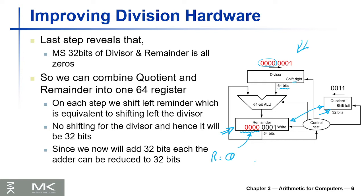The divisor will be 32 bits — we're going to cut it in half. We initialize the remainder register with the dividend, which is 32 bits. The arithmetic operation is then only 32-bit, decreasing the size by half. We discard the separate quotient register because it's combined into the remainder register, which will contain both the remainder and quotient at the end, and the divisor will be 32 bits.